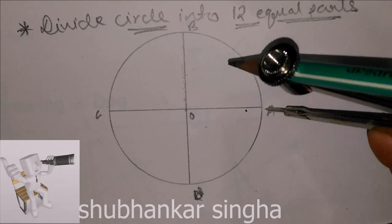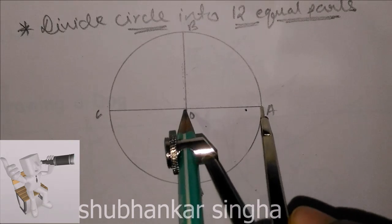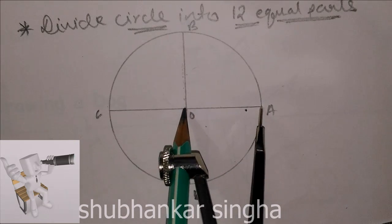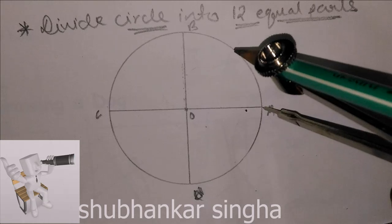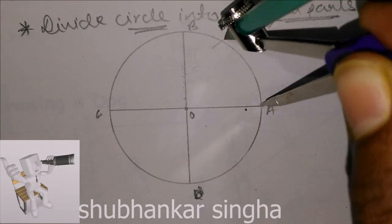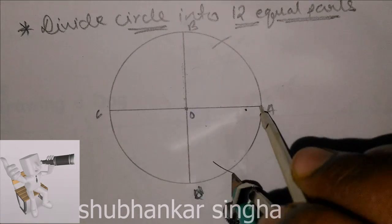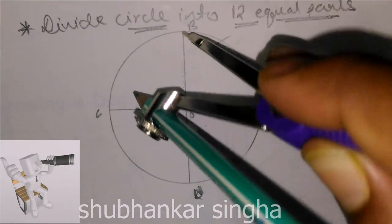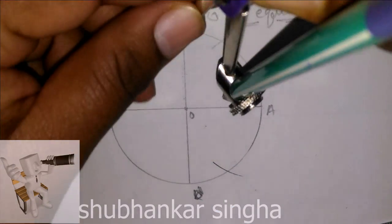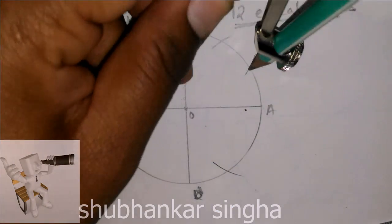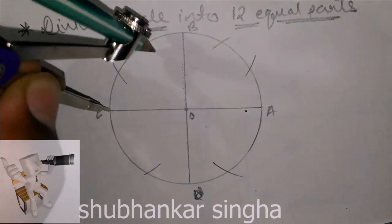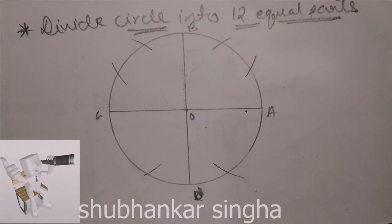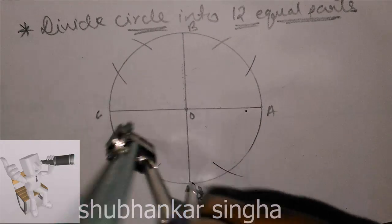Now take from here the radius of the circle, that is OA. Mark on the compass the radius of the circle, then mark on the circle like this and like this. And from B, same process — like this and like this. And from C, same process — like this and like this. And from D, same process.